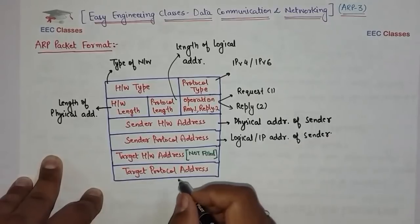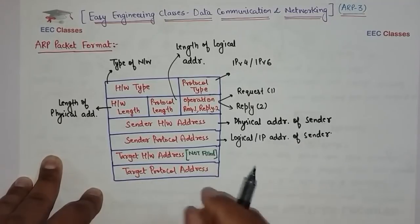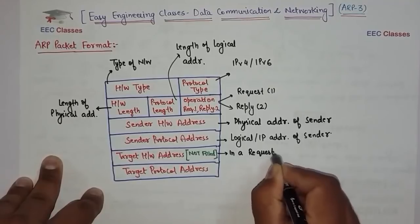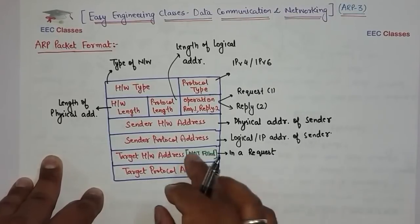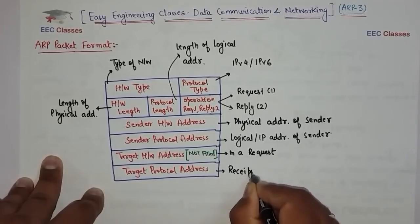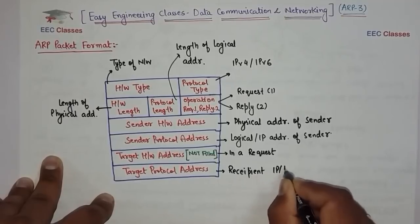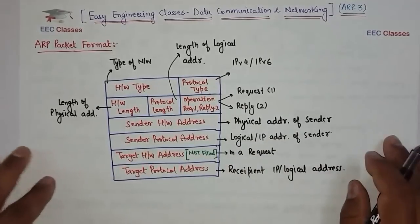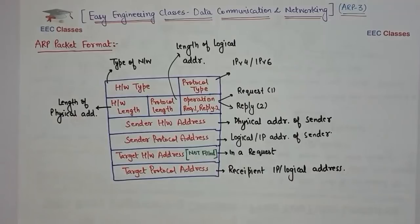Target Hardware Address is generally not filled in a request message — it is only filled in a reply. Target Protocol Address is the recipient's IP or logical address, and it is also not filled in a request. This covers all the fields of the ARP packet format.